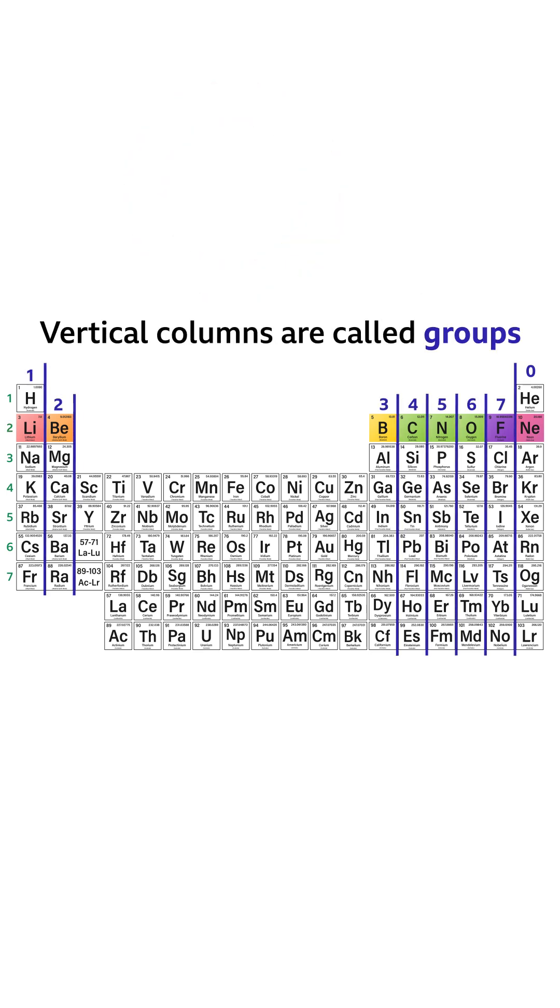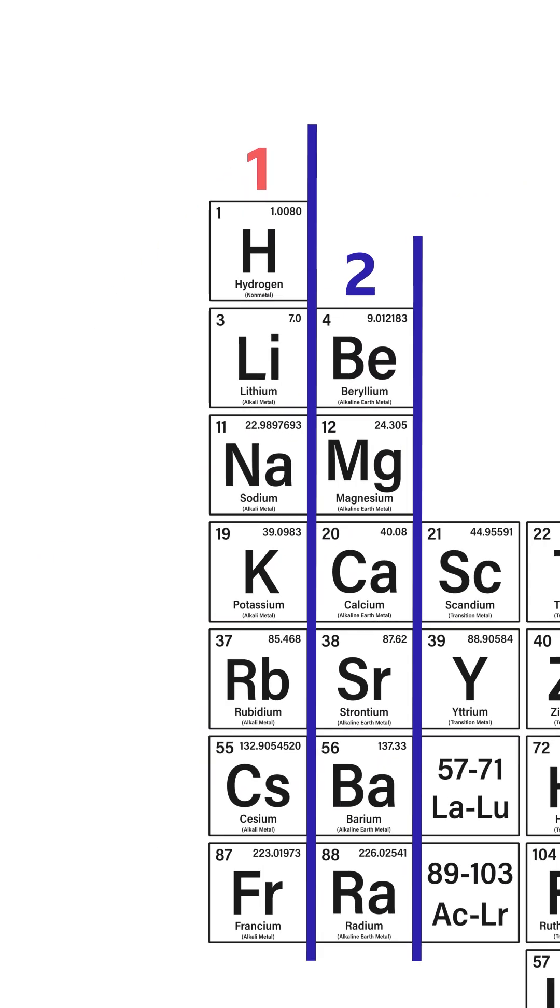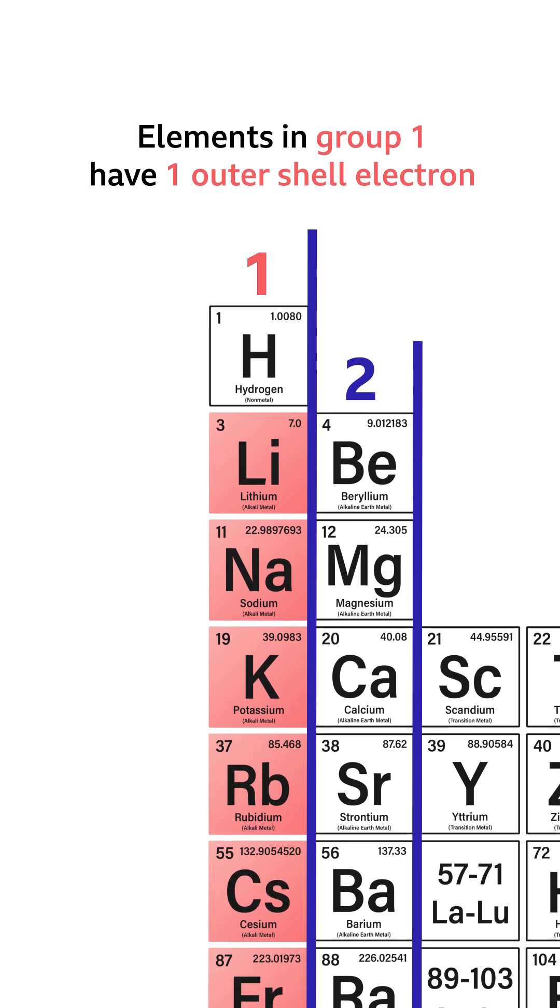And as we go down the vertical columns, the groups, the elements all have the same number of electrons in their outer shell. So in group one, ignoring hydrogen for the moment, we have lithium, sodium, potassium, and so on. All have one outer shell electron.